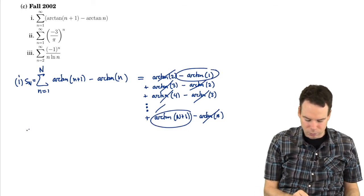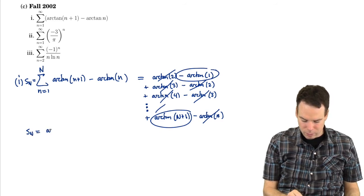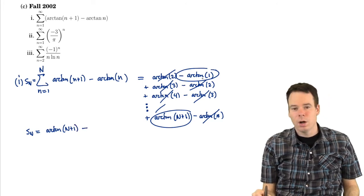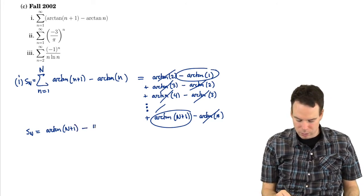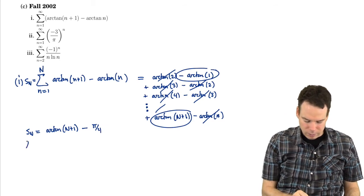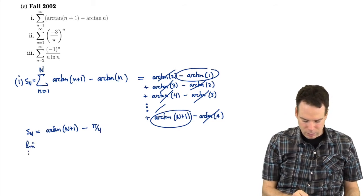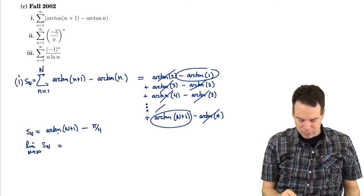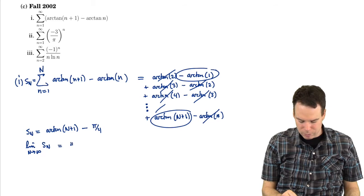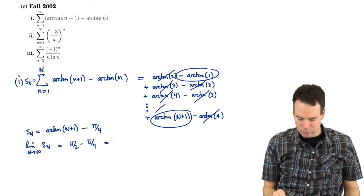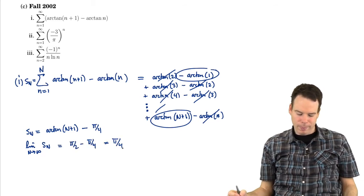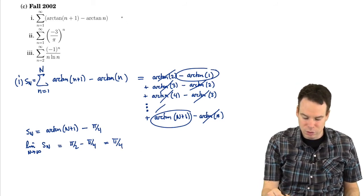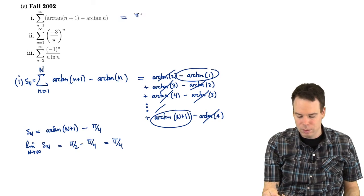It's arc tan of n plus 1 minus arc tan of 1. Arc tan of 1 is π by 4. Now the limit as n goes to infinity of s_n is the limit as n goes to infinity of arc tan of n plus 1, so that's π by 2 minus π by 4, so that's π by 4. So the limiting value of the nth partial sum is π by 4. That means the series converges to π by 4.